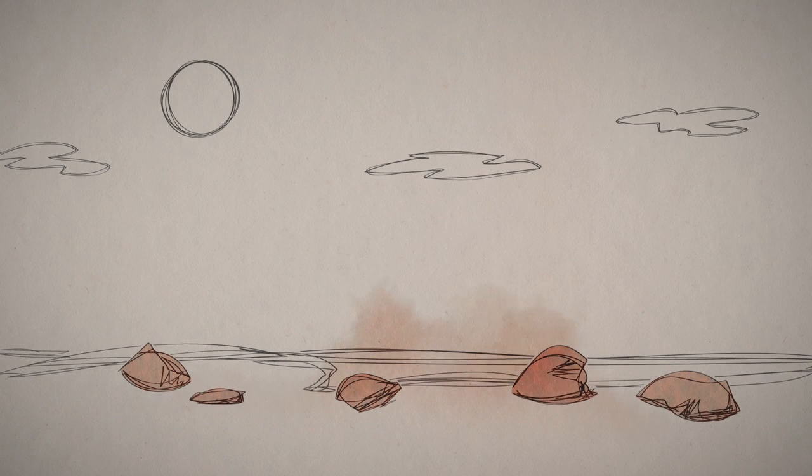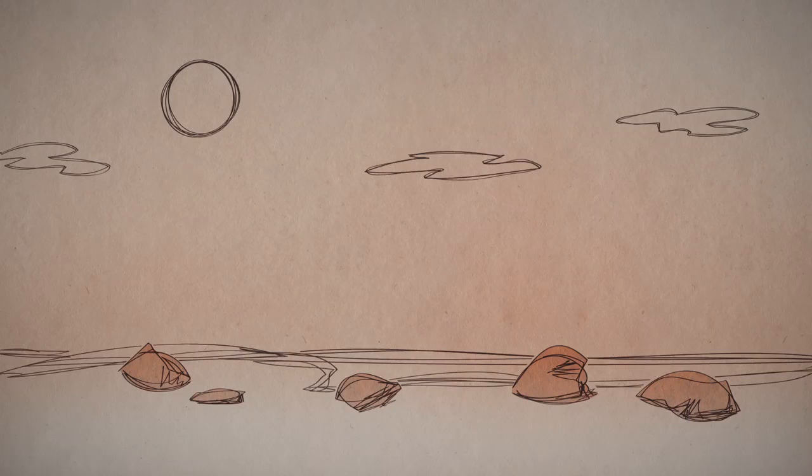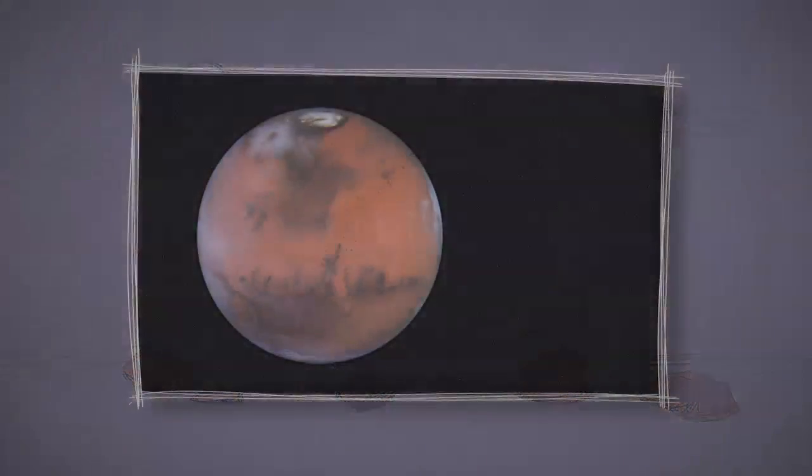When rusty dust from those rocks gets kicked up in the atmosphere, it makes the Martian sky look pink. From a long way away, the whole planet looks kind of reddish.